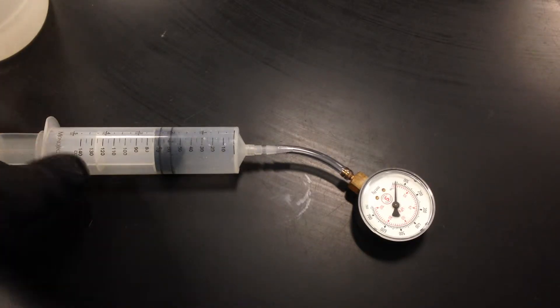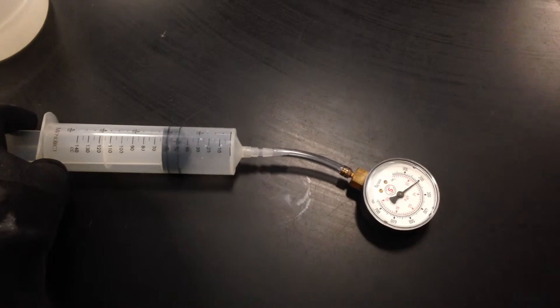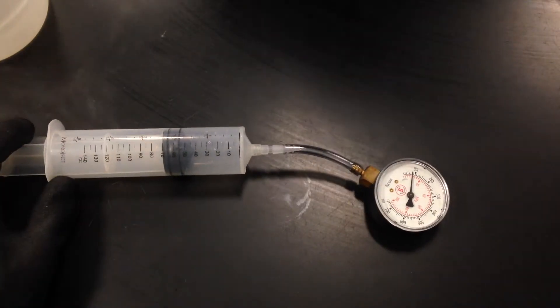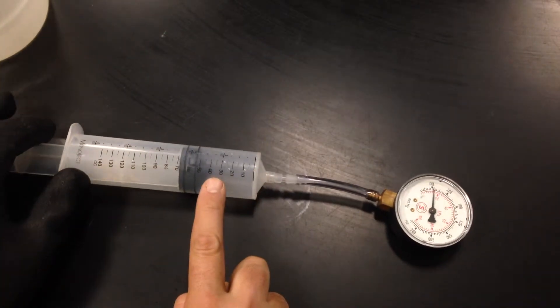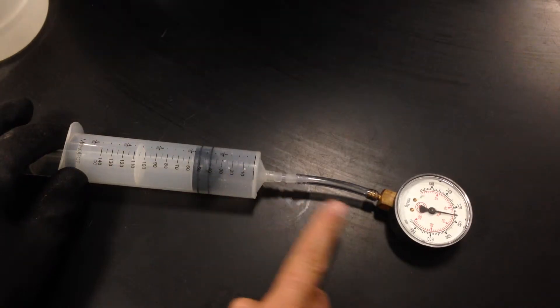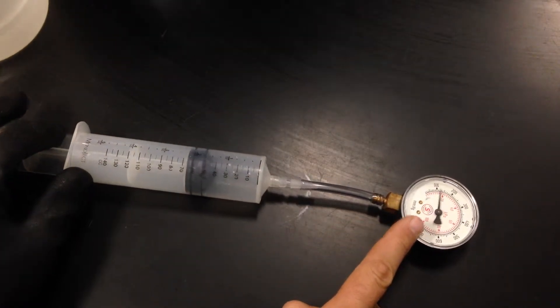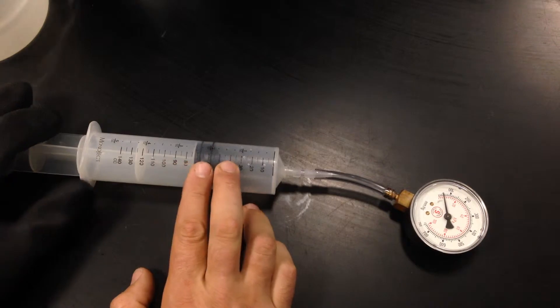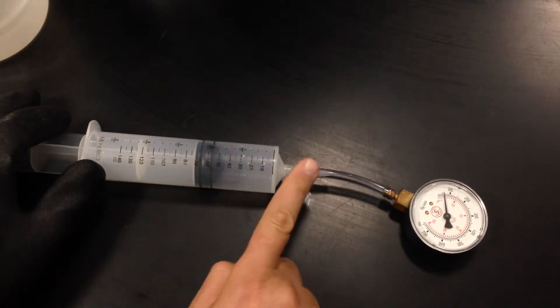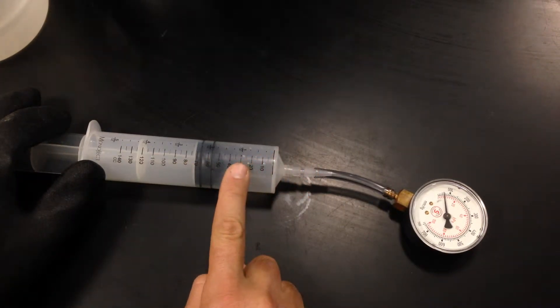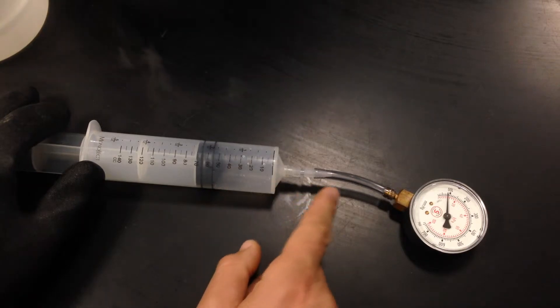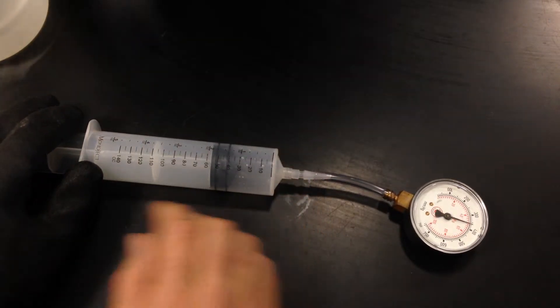All right, so what I'm going to do is I'm going to push on this pressure gauge. And you can see by making the space go smaller, you can see that the pressure increases. So it's hard to see it exactly, but if I was to halve the volume, we should see our pressure double.